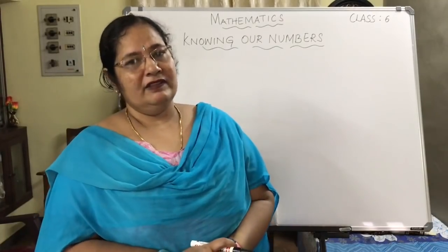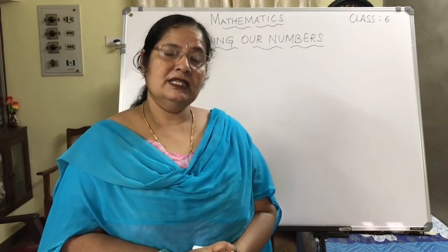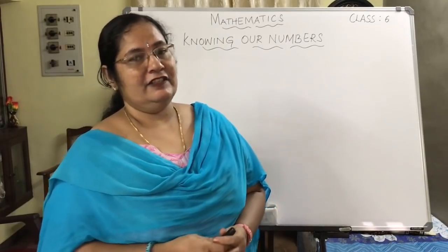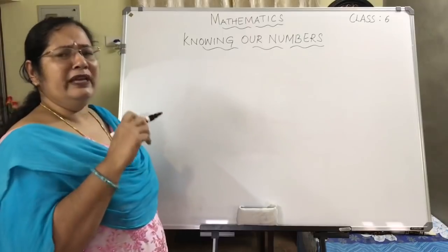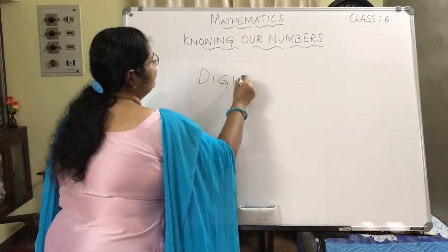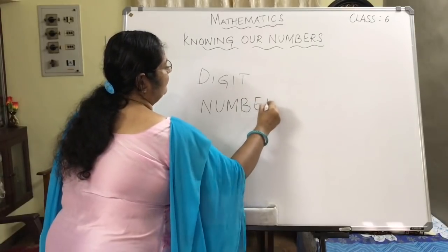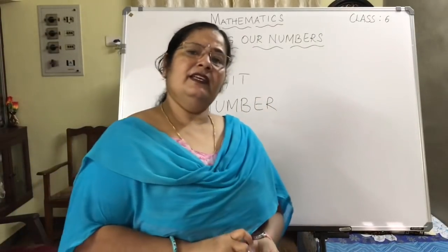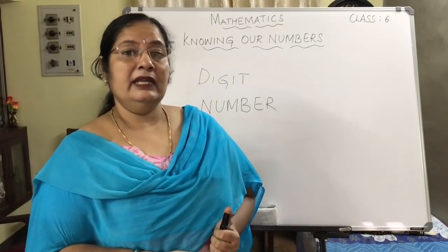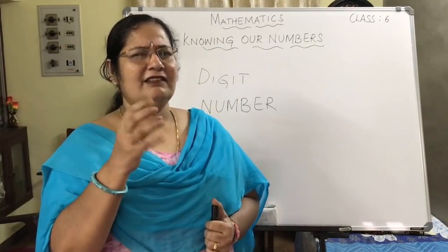Now when you deal with this chapter there are many new words that come in. Two of them I will say just now. Two words quite often come — they are digit and number. Is there any difference between digit and number, or are they the same? Just think for a second.